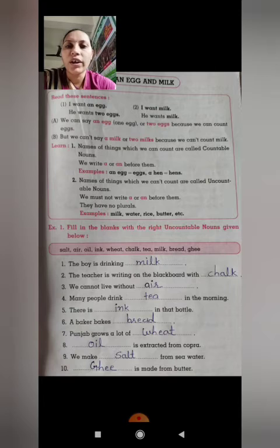Like examples: milk, water, rice, butter. Milk joh hum usko countable nahi kar sakte. Water joh liquid hote. Rice joh bahut saare rice hote hum gin nahi sakte. And butter, woh bhi uncountable noun hai.